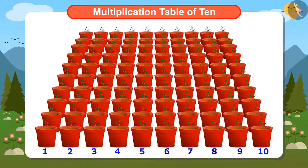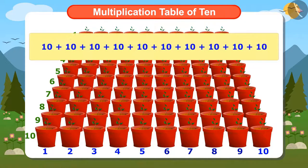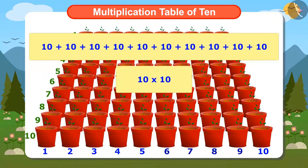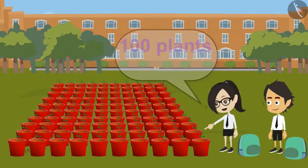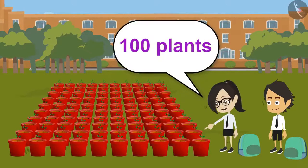Now tell me, how many rows of plants are there? 10. So to find out how many plants there are, we will add 10 ten times, or multiply 10 by 10. To know this, we use the Multiplication Table of 10. 10 times 10 is 100. So there are a total of 100 plants kept here.